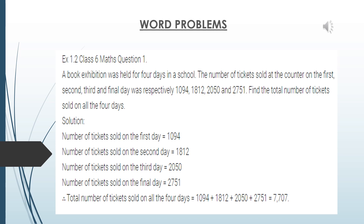Number of tickets sold on the second day is 1812, on the third day is 2050, and on the final day is 2751. For finding the total number of tickets sold on all four days, we add all these numbers: 1094 + 1812 + 2050 + 2751, and we get 7707.